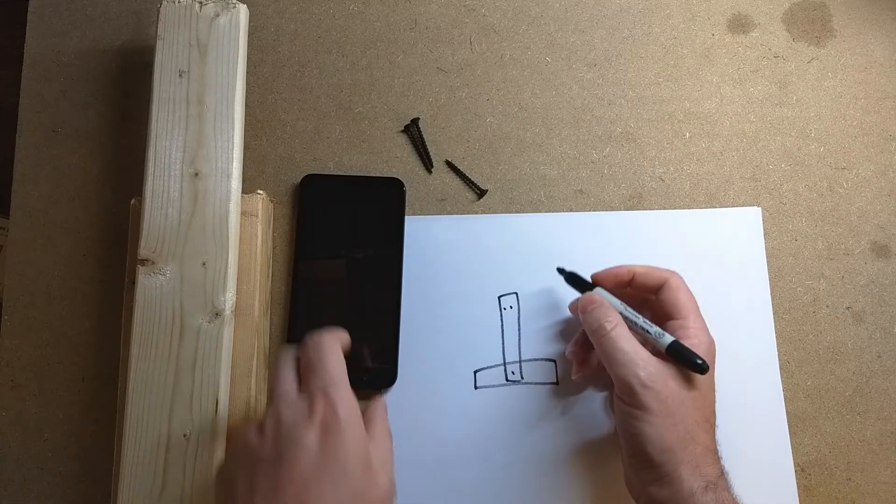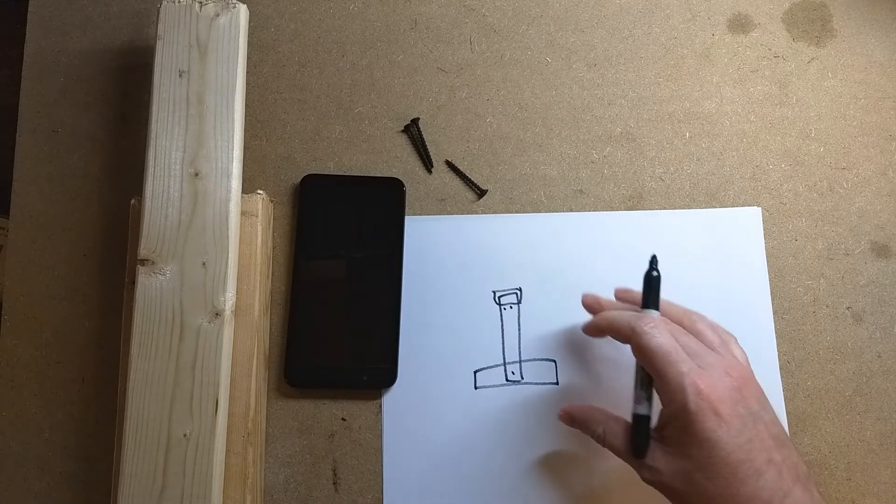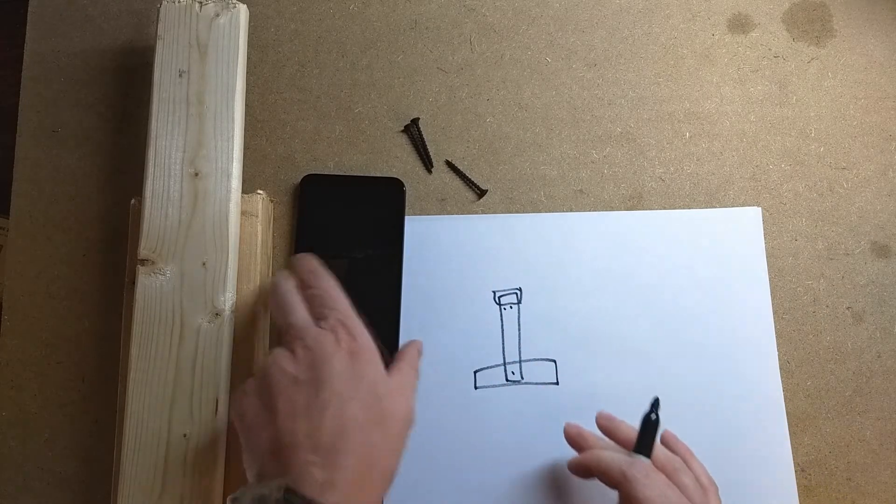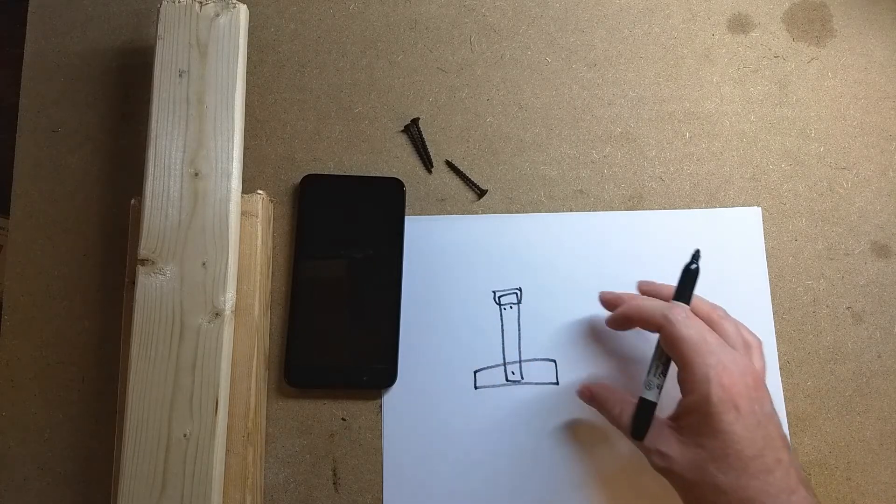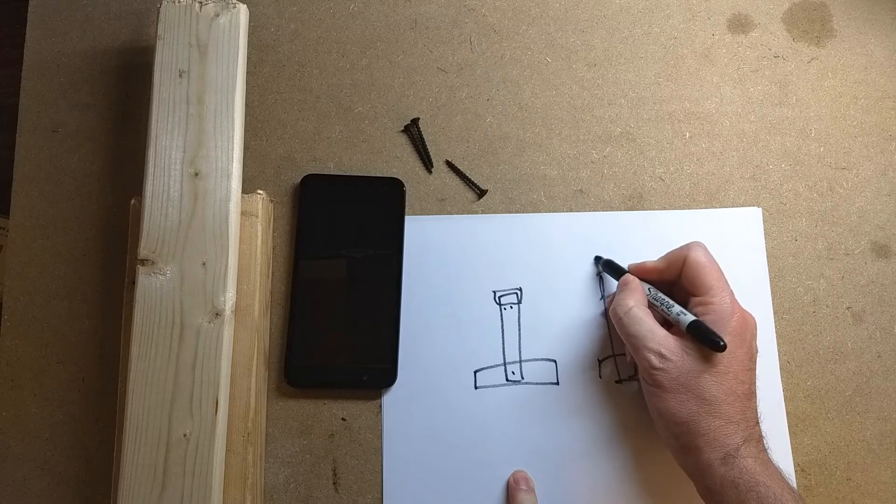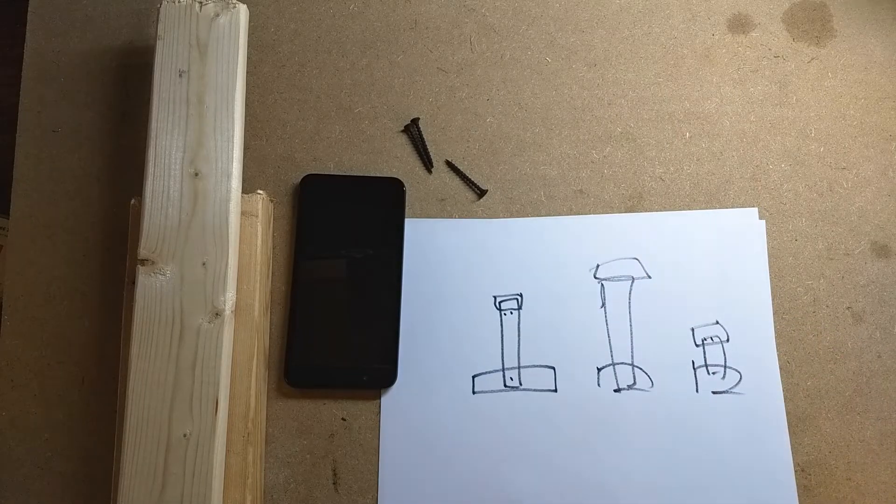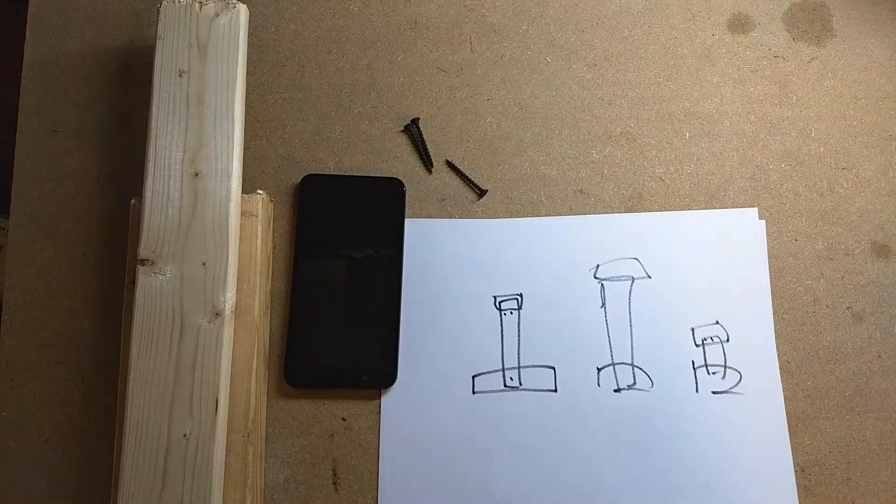Then have a couple more screws up here that the phone can just rest on, and then place this up in the window with some varying heights for some other ones so I can have a bunch of these at varying heights to have different eyes looking at you and blinking.